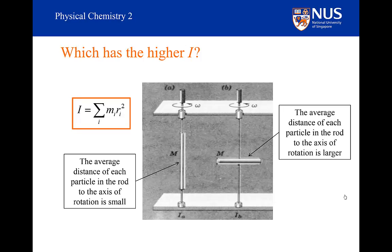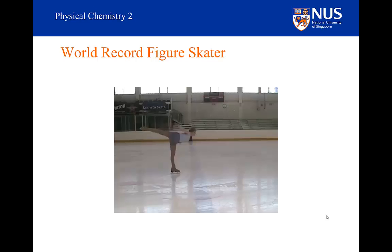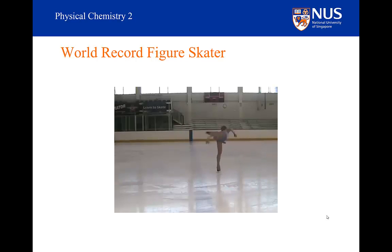This is best illustrated in a video. This is a video of Natalia Kanunikova, who set a world record for the fastest spin on ice skates. This is not her world record spin, but illustrates the technique she uses to achieve higher rates of rotation. How does she go about increasing her rotational velocity? What has she done? And if we look closely, we can see that she pulls her legs closer to her body. But why has this changed her rotational velocity?